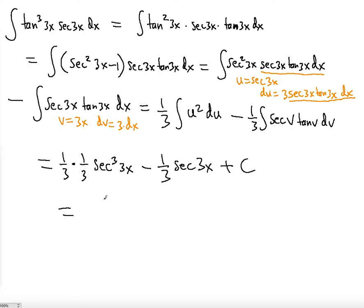So this turns out to be 1 ninth secant cubed 3x minus 1 third secant 3x plus a constant. So this should be the correct antiderivative. If you got this result, then you did the correct work. Hope this was a lot of fun. Thanks for watching and see you in the next video.